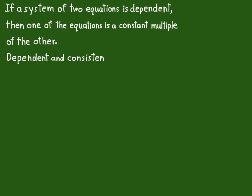This is an example of something that's dependent and consistent. Notice the second equation is just two times the first equation. Every single term on the top one was multiplied by two to give the bottom one. That's when it's dependent and consistent for two equations with two unknowns.